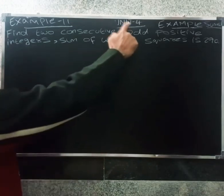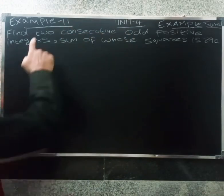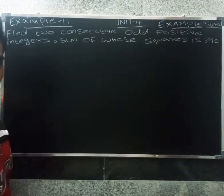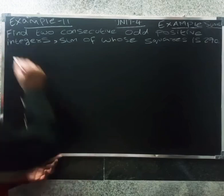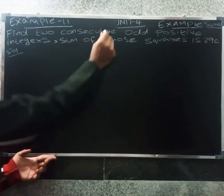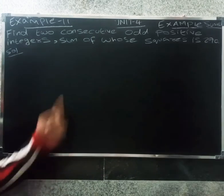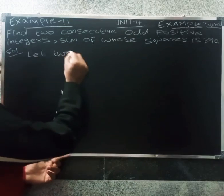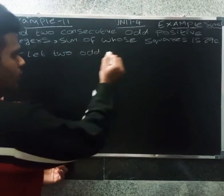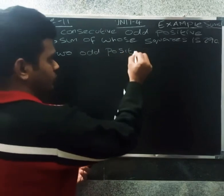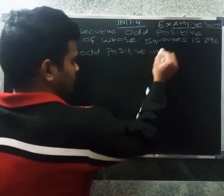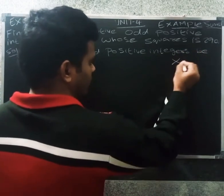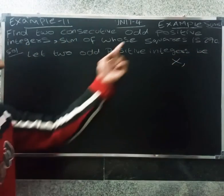Welcome friends, now we need Example 11. Find two consecutive odd positive integers sum of whose squares is 290. So two consecutive odd positive integers, let two odd positive integers sum of whose squares.